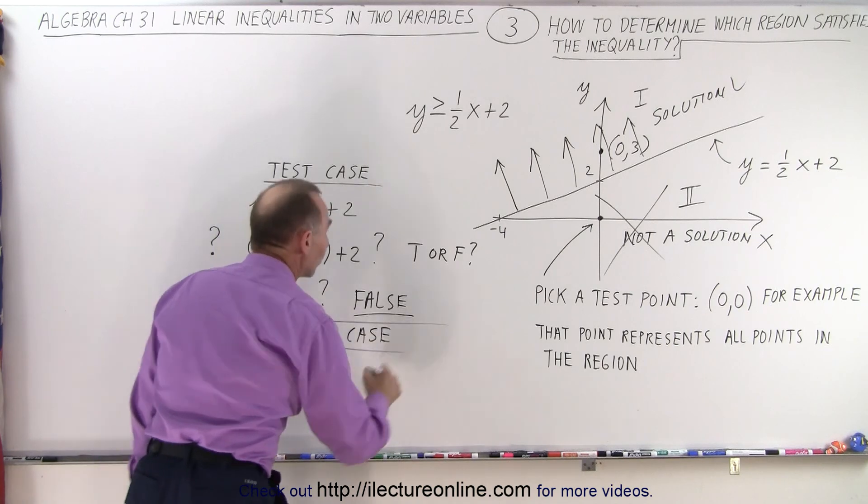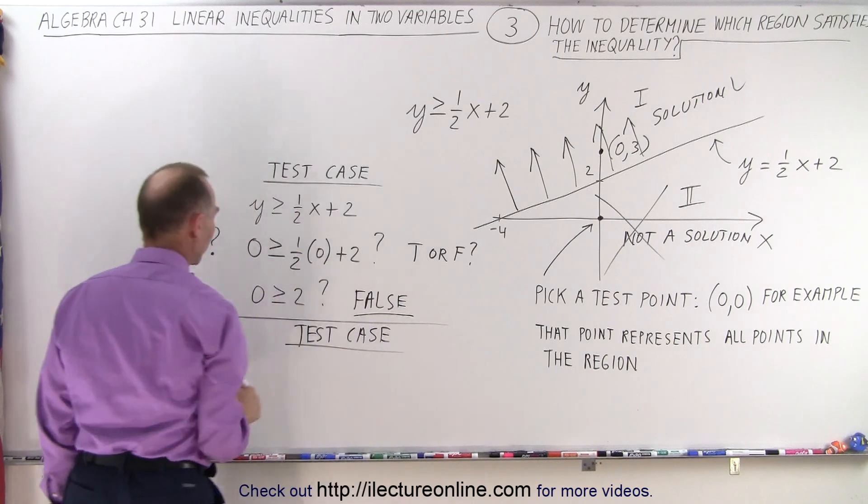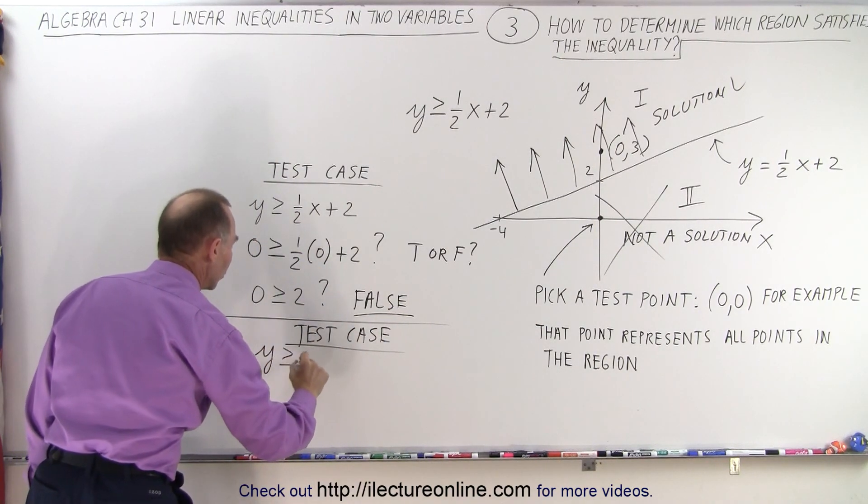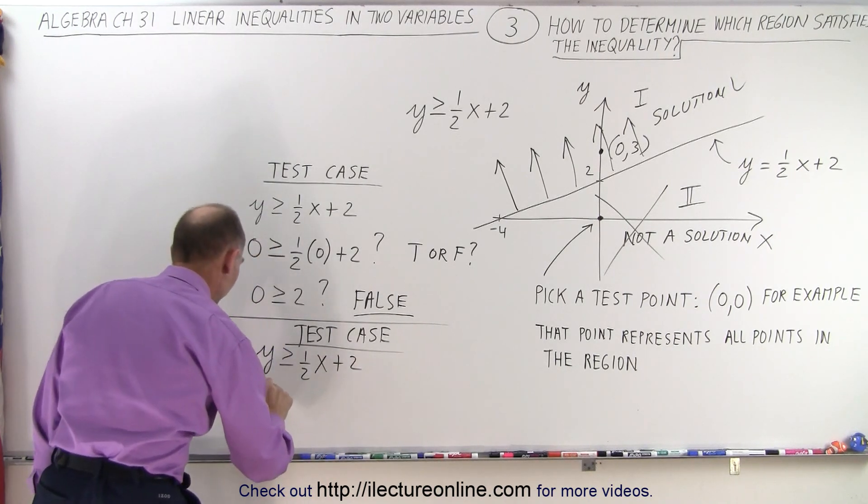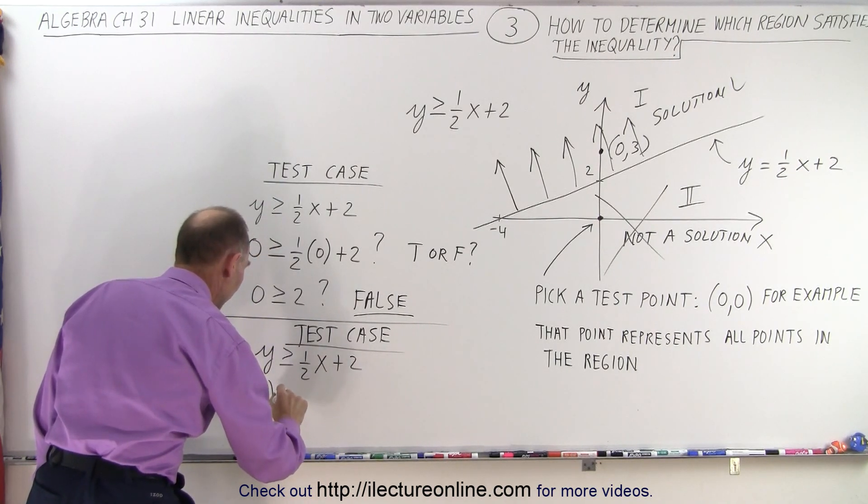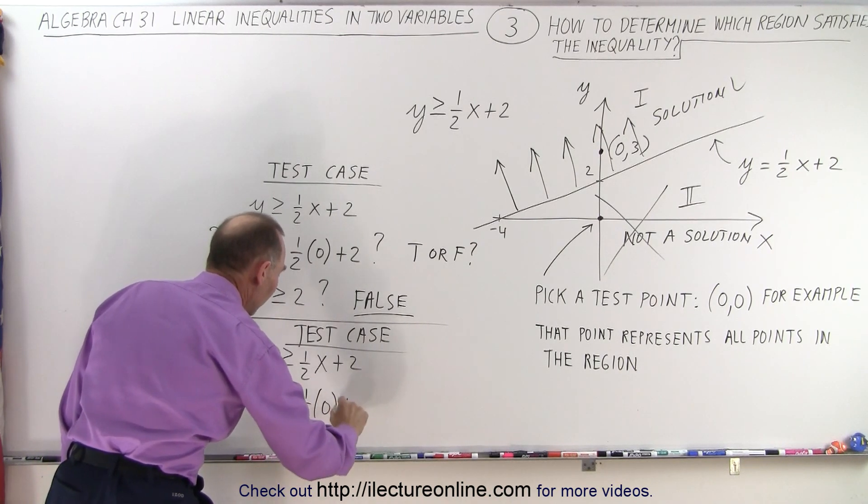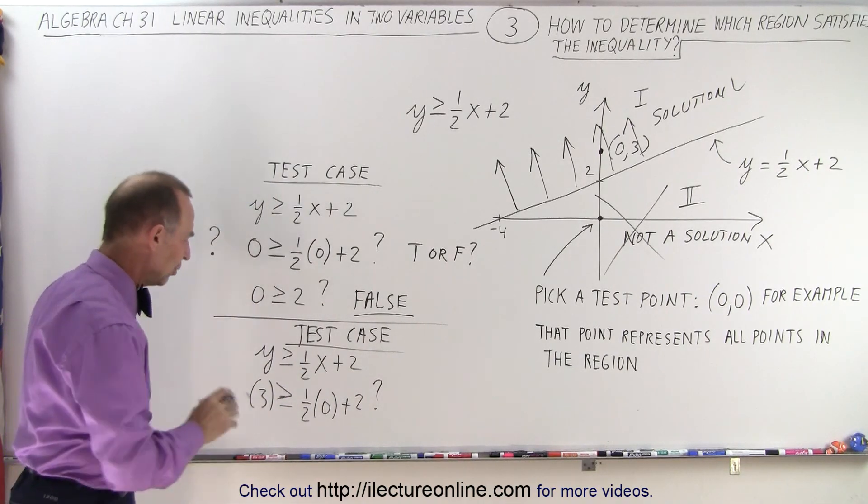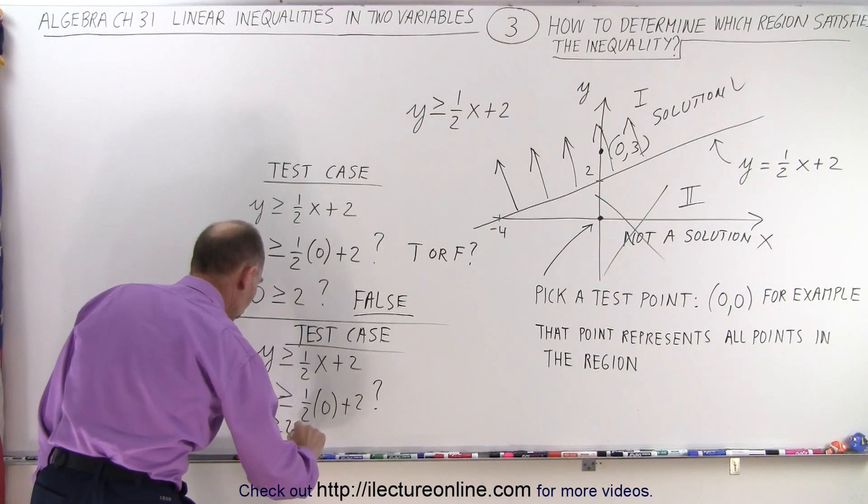We're going to plug in the values 0 for x and 3 for y into our inequality. So we have y is greater than or equal to 1/2 x plus 2. We plug in 3 for y: 3 is greater than or equal to 1/2 times 0 plus 2. We have 3 greater than or equal to 2, question mark.